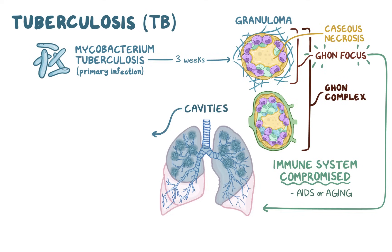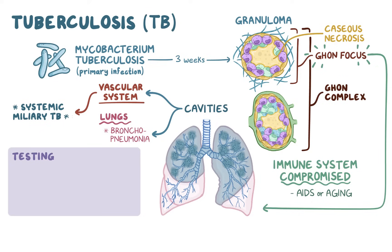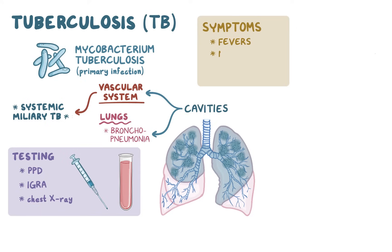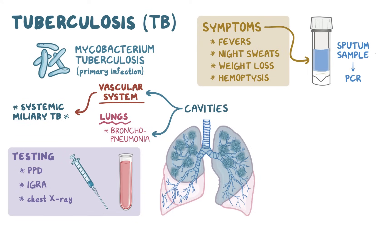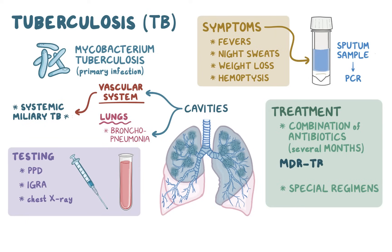From cavities, bacteria can disseminate to other parts of the lungs causing bronchopneumonia, but it can also spread through the vascular system and infect almost every tissue in the body, which is called systemic miliary TB. Testing for TB starts with a PPD intradermal skin test or an IGRA blood test, and a chest X-ray can identify signs of active TB disease. In patients with fevers, night sweats, weight loss, and hemoptysis, a sputum sample can be stained, cultured, and PCR can be done to look for mycobacterium tuberculosis. Treatment of active TB includes a combination of antibiotics given for several months, and special regimens are used for MDR-TB and XDR-TB.